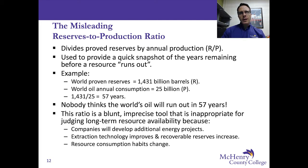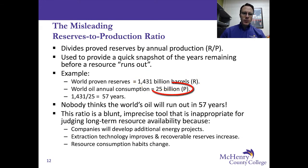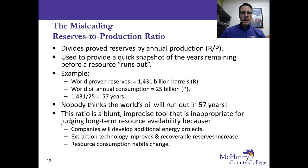The most typical example where the reserves-to-production ratio is applied is with petroleum. Right now the world's proven reserves are 1,431 billion barrels — that's the R in the ratio. Annually, the world consumes about 25 billion barrels — that's the P. The division is straightforward: you simply divide R (1,431) by P (25) and you get a shocking 57 years of petroleum left.